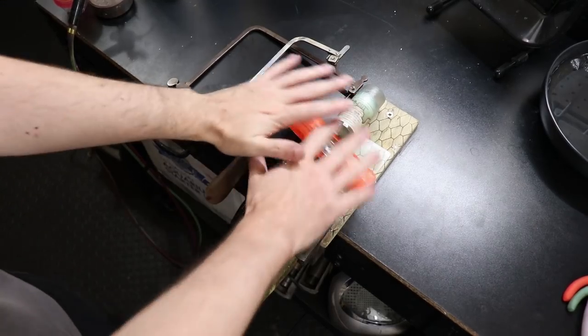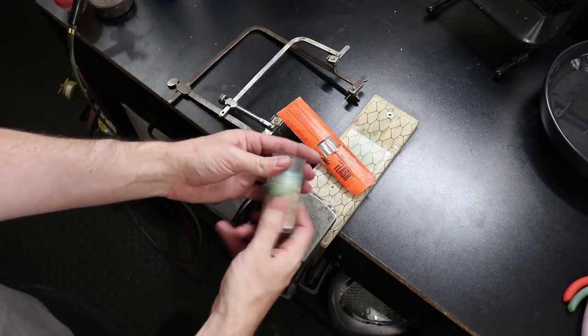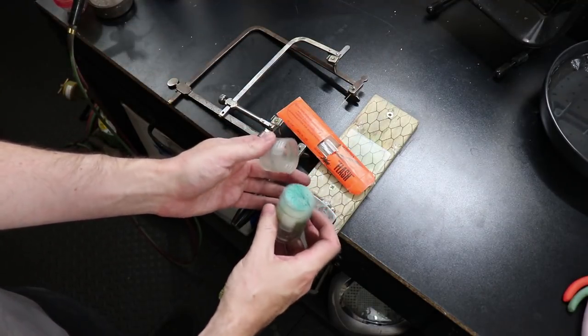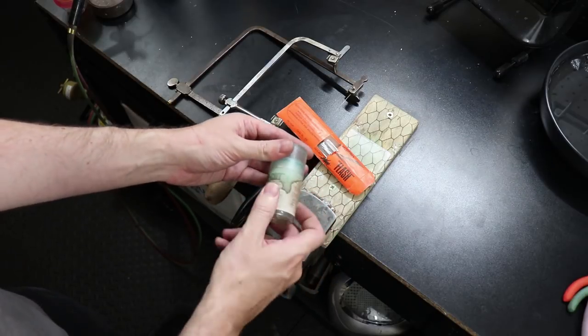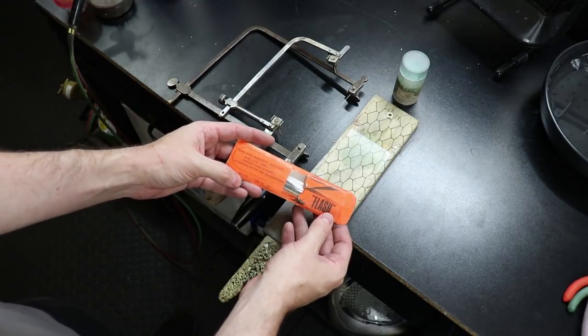So here's my entire sawing setup. When using a jeweler saw, you're going to need some sort of blade lubricant. So far, this is the best lubricant I've found, and it's called Pro Cut. But you can also use beeswax or machine oil. This one also doubles as a lubricant for burrs and drill bits.